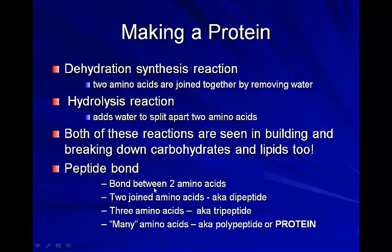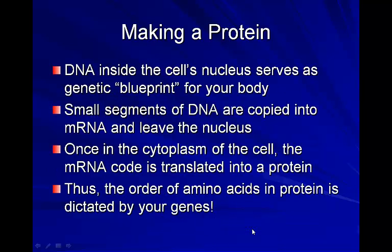The bond formed between two amino acids is called a peptide bond. Two amino acids joined together is a dipeptide; three amino acids is a tripeptide. Many amino acids joined together form a polypeptide — 'poly' meaning many. A protein is essentially another name for a polypeptide, similar to how a carbohydrate is the name for a polysaccharide.